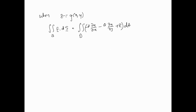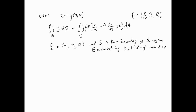Here is a useful shortcut for surfaces of the form z = g(x,y) — for instance a paraboloid like z = 1 − x² − y². The surface integral simplifies directly, where F = (P, Q, R), and the parameters are x and y with no parameterization needed. The formula becomes the double integral of (−P·g_x − Q·g_y + R) dA.